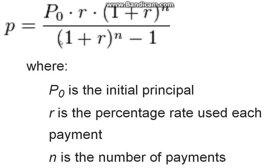That divided by 1 plus the rate to the nth power, minus 1. This whole thing is equal to P, which is the amount you'd have to pay for each of those payments to pay off the loan completely.